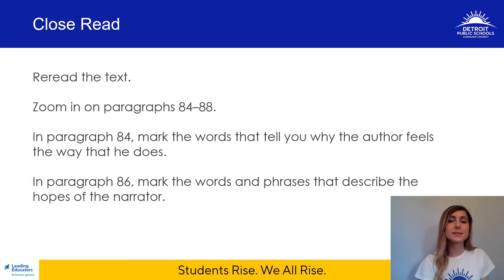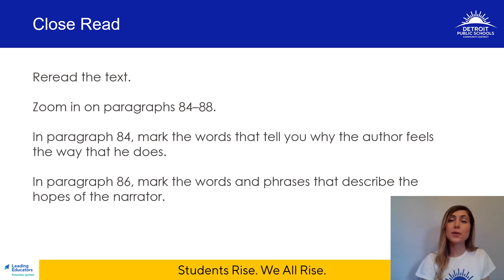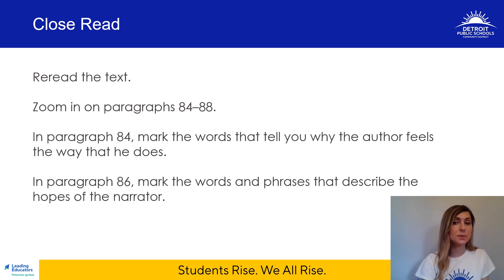You can go back and reread the text in its entirety if you choose, or just your annotations. For now, I'd like you to zoom in on paragraphs 84 to 88. In paragraph 84, mark the words that tell you why the author feels the way that he does. In paragraph 86, mark the words and phrases that describe the hopes of the narrator. Take some time to complete these steps now — pause the video.